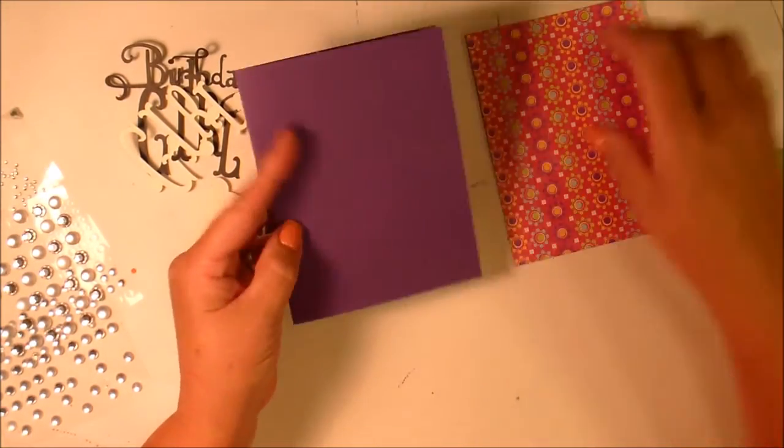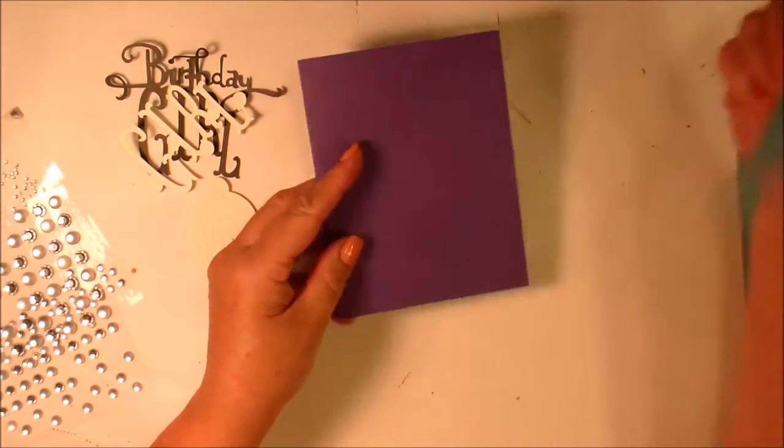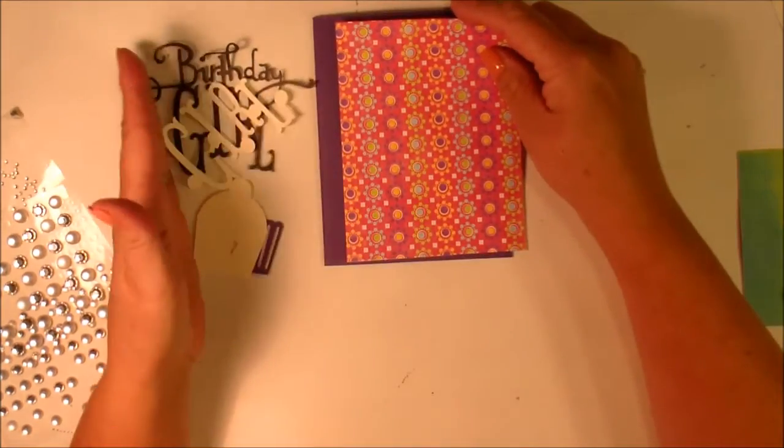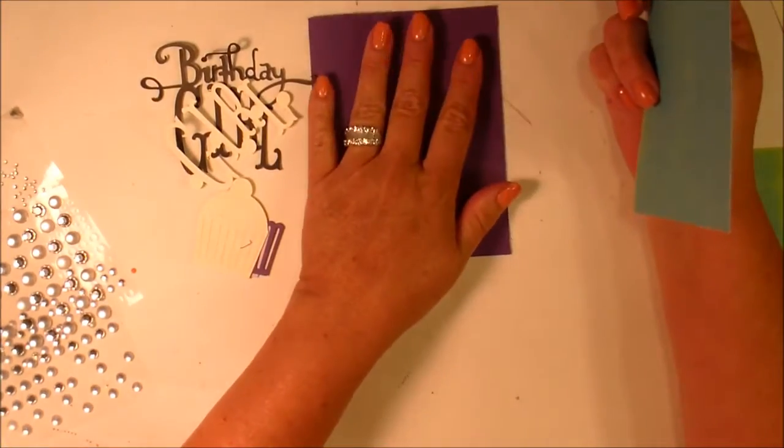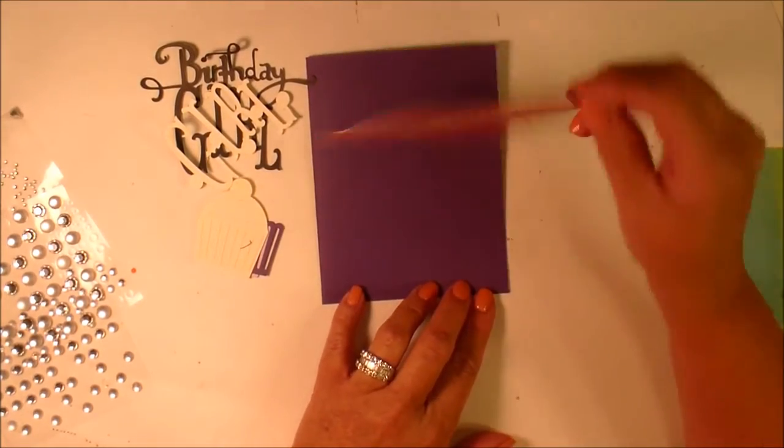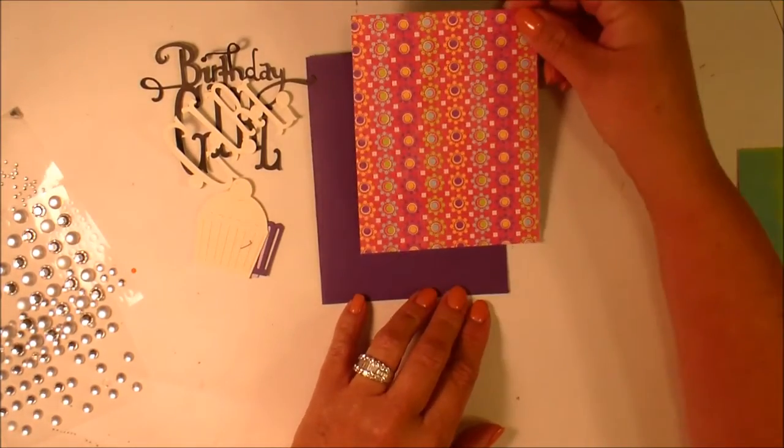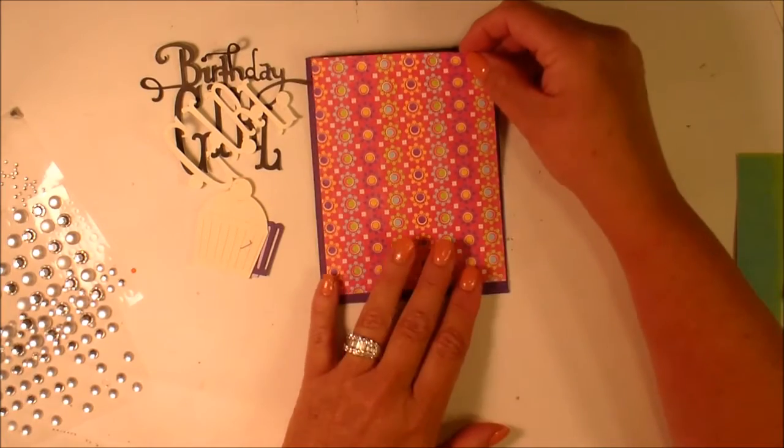I went through my stash because I wanted something a little bit more colorful on the top than just putting flat solid color. I came across this paper—I'm not really sure where I got it from. It's got really pretty green on the back as well, but we're not going to use the green part.